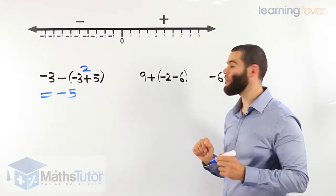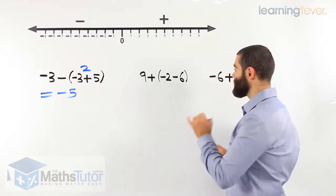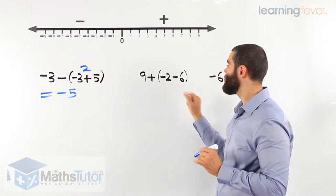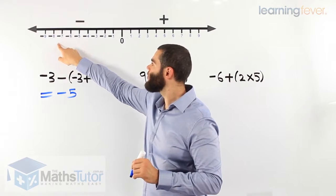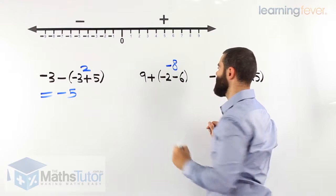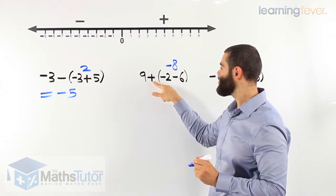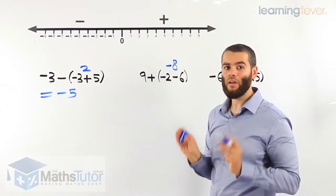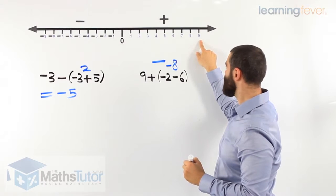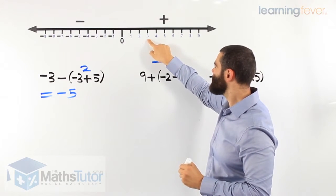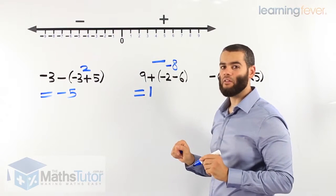Here we have 9 plus, in brackets, negative 2 minus 6. Following order of operations, we do the brackets first: negative 2 minus 6. We start at negative 2 and go left: 1, 2, 3, 4, 5, 6 — so negative 8. Then we have 9 plus negative 8. A plus and a minus next to each other — they fight and minus wins — so it's 9 take away 8. Starting at 9 and going left: 1, 2, 3, 4, 5, 6, 7, 8. The answer is 1.